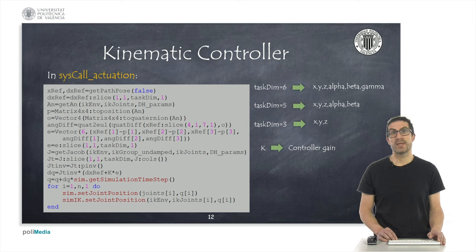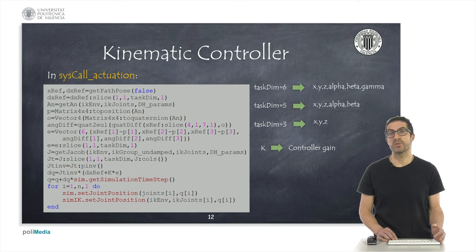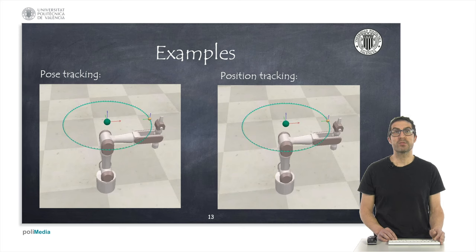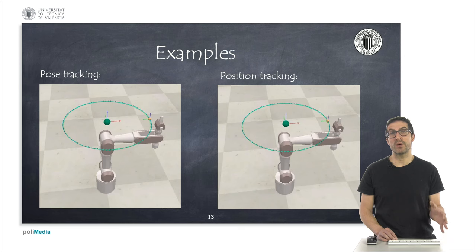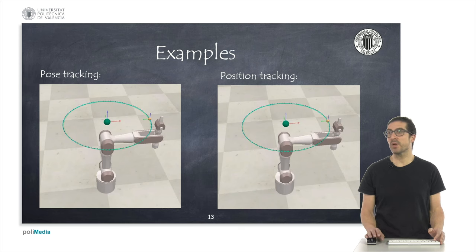It is important to know that K is the gain of the controller. This can be a scalar that affects all tasks in the same way, but it could also be a diagonal matrix. I usually use values around 0.5, but a higher gain could also be used, which would imply faster convergence to the trajectory. Here I show two demonstrative examples of how the kinematic control works using a robot with 7 degrees of freedom. The goal of the first example is to track a posture or pose, in which both the position and orientation of the end effector must follow a specific reference. In the second example, I show position tracking with free orientation. Let's see the first video.